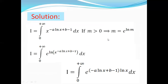First, let's remember that if m is positive then m equals e to the power ln(m). So this term can be written as e to the power of ln(x) raised to the power minus a·ln(x) + b, minus 1, dx.